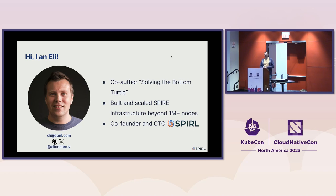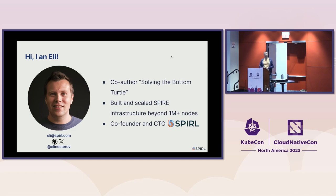In 2020, a few months through the pandemic, we were writing a book about infinite progress problems in security and how SPIFFE and SPIRE help to solve them. The book is called Solving the Bottom Turtle — it's completely free at spiffe.io/book. I'm also co-founder and CTO of a company called Spiral, where we build a workload identity platform based on the SPIFFE specification.